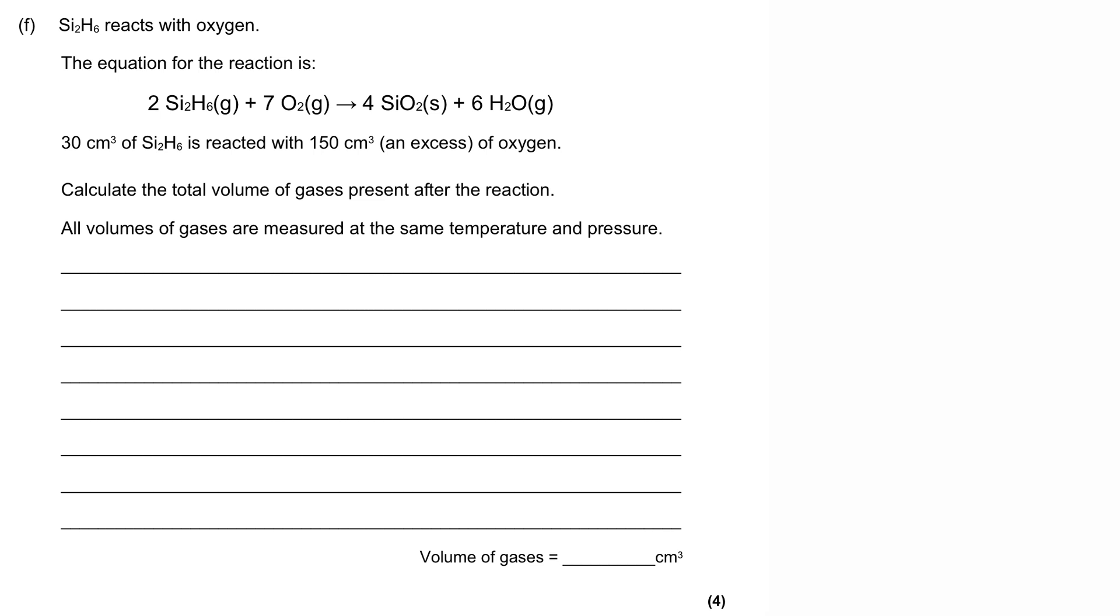Si2H6 reacts with oxygen. The equation for the reaction is 2Si2H6 gas reacts with 7O2 gas and produces 4SiO2 solid plus 6H2O gas. We're told 30 cm³ of Si2H6 is reacted with 150 cm³, which is an excess of oxygen. We've been asked to calculate the total volume of gases present after the reaction, and we're told that all volumes of gases are measured at the same temperature and pressure. This is a four-mark question.